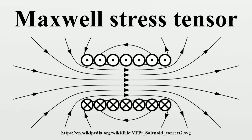As outlined below, the electromagnetic force is written in terms of E and B. Using vector calculus and Maxwell's equations, symmetry in the terms containing E and B emerges, and introducing the Maxwell stress tensor simplifies the result.